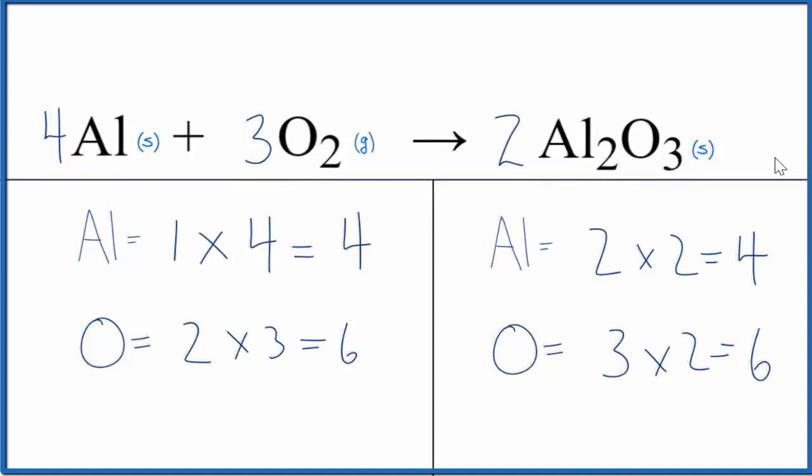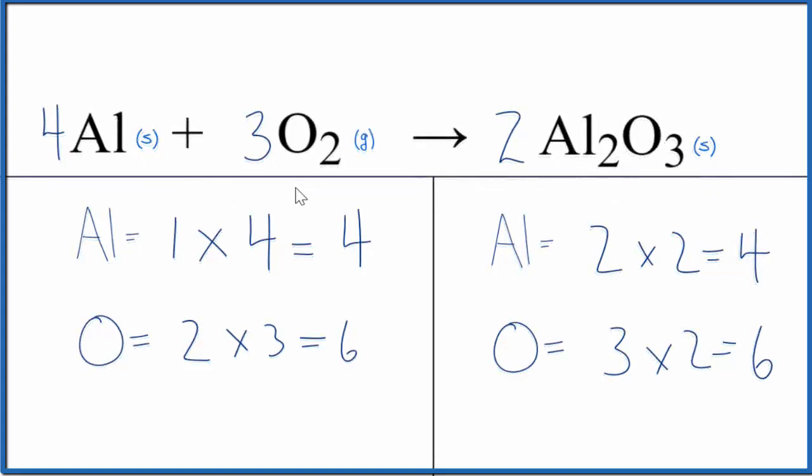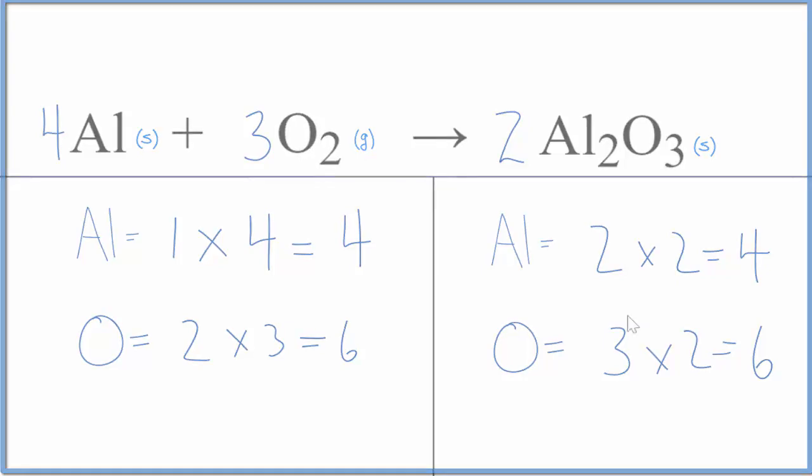This is Dr. B with the balanced equation for Al plus O2 yields Al2O3. Aluminum plus oxygen yields aluminum oxide. The type of reaction would be combination, also called synthesis. You could call this a combustion reaction. And finally, it is a redox reaction. Thanks for watching.